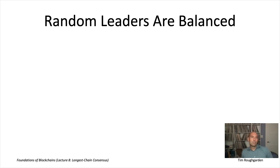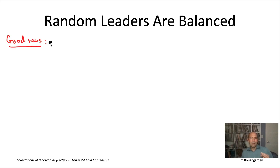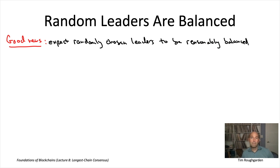In this video, I want to explore what happens when in each round we choose a leader uniformly at random. Each of the n nodes is equally likely — probability one over n — to be the leader for that round. The primary motivation for looking at randomly selected leaders is that it will extend very easily to the permissionless setting. Also, intuitively, randomly chosen leaders should do pretty well with respect to this balance condition.